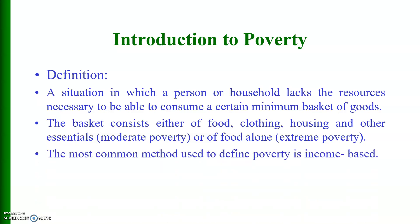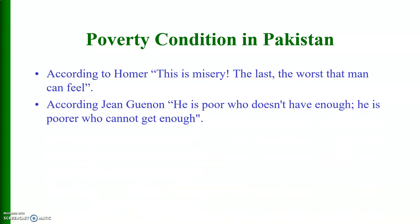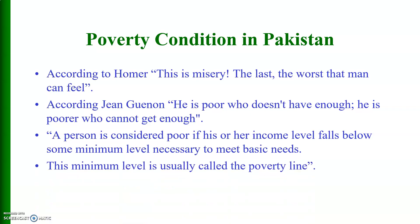The most common method used to define poverty is the one based on income. According to Homer, poverty is misery — the last and worst that man can feel. And according to Gene, he is poor who doesn't have enough, and he is poorer who cannot get enough. A person is considered poor if his or her income level falls below some minimum level necessary to meet basic needs. This minimum level is called the poverty line.